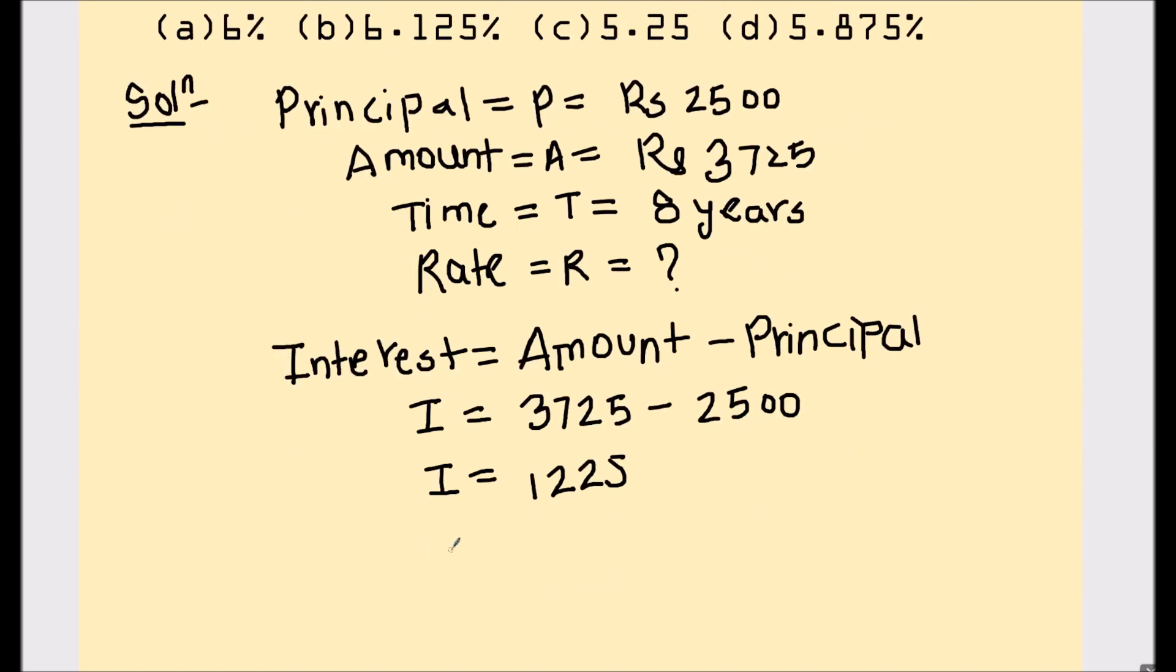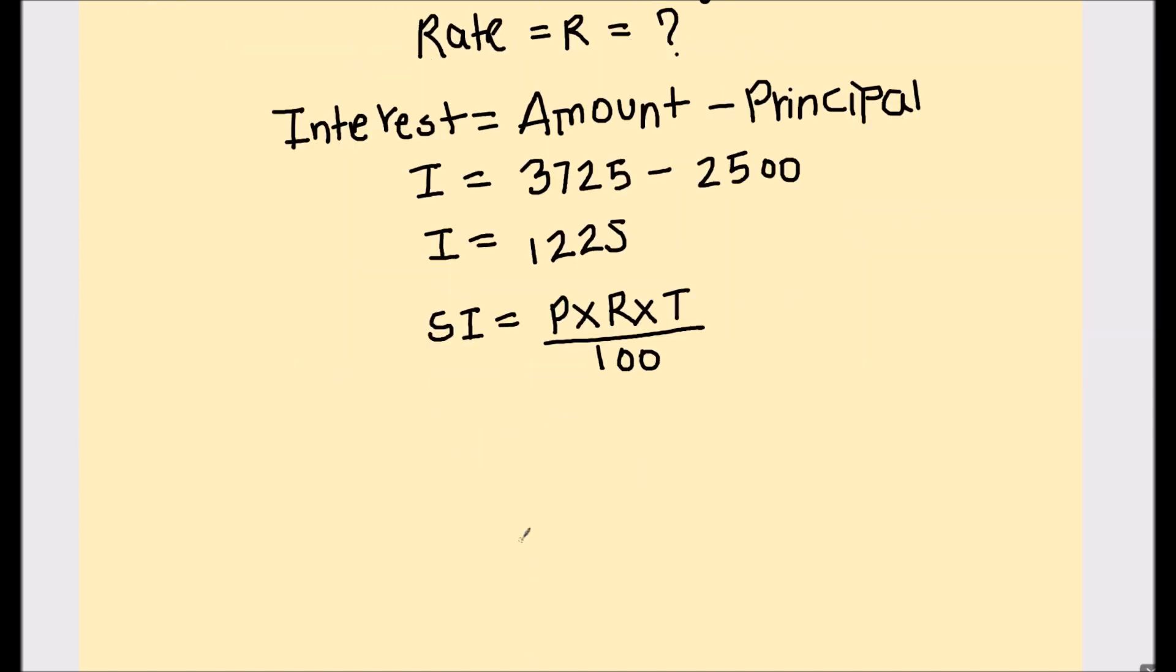Now, we are going to use the simple interest formula, which is simple interest equals P times R times T divided by 100 to find the rate of interest. Substituting the values, simple interest is 1225, principal amount is 2500, rate of interest we need to find out which is R, time is given as 8 years and divided by 100.